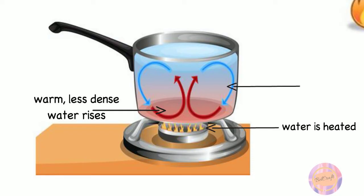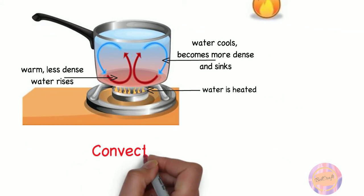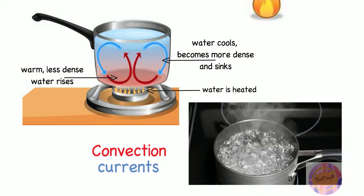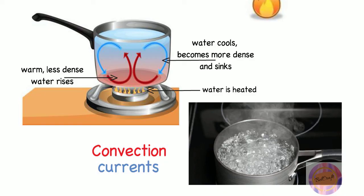Once it gets there, it cools down again because it is further away from the heating source. This causes it to become more dense and sink. These movements of the water are convection currents, and that's why boiling water moves around so much.